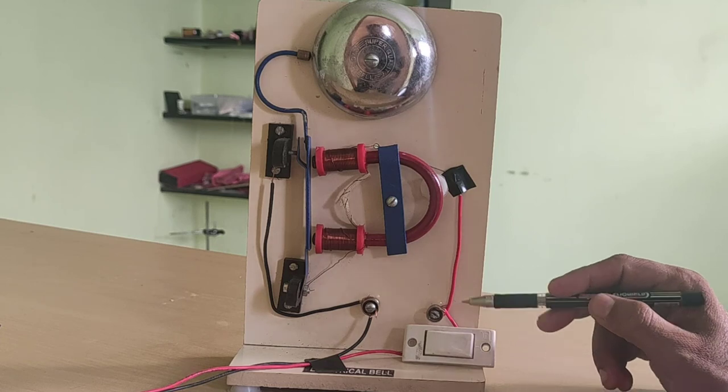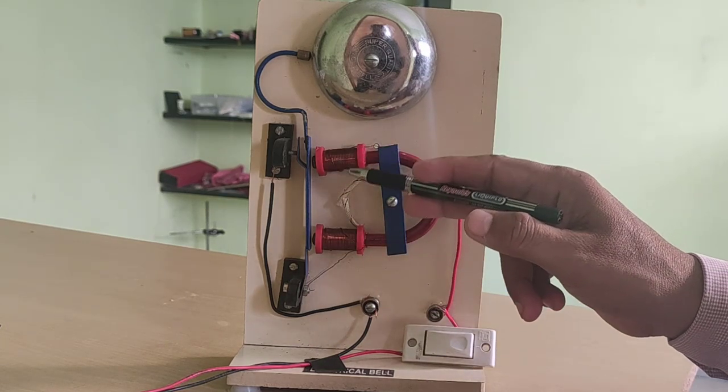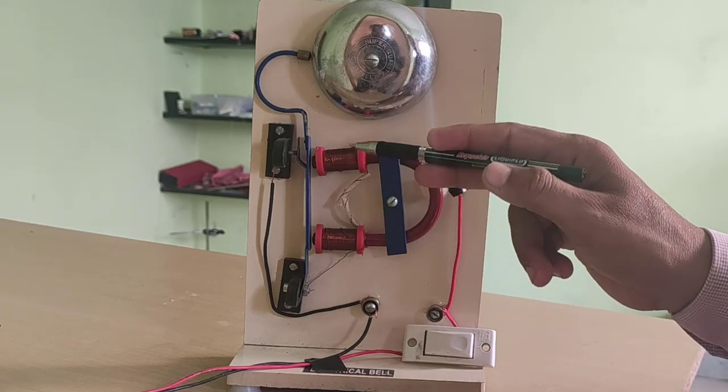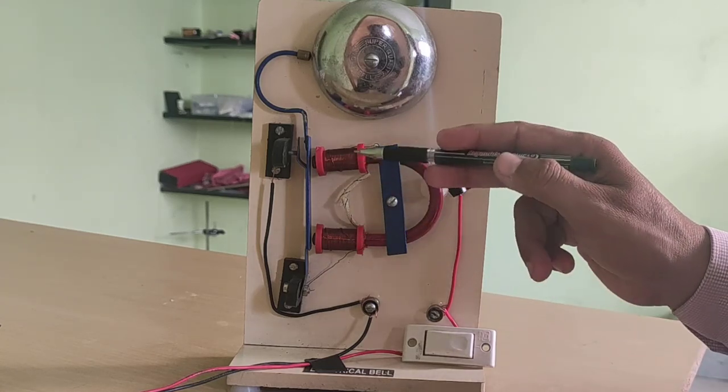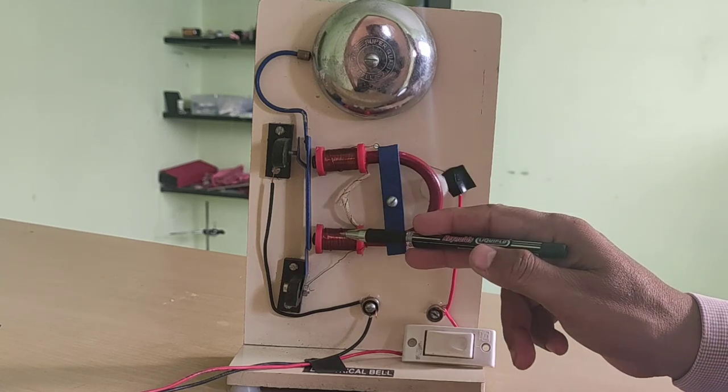When we switch on, the current flows through this circuit and when current flows, these coils create magnetic fields around them and these coils act as an electromagnet.